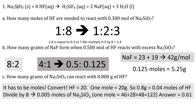For part (a), how many moles of hydrogen fluoride are needed to react with 0.3 moles of sodium silicate? The ratio is 1 to 8, so we set up: 1 to 8 equals 0.3 to x. Since 8 is eight times bigger than 1, you multiply 0.3 by 8, giving 2.4 moles of hydrogen fluoride.